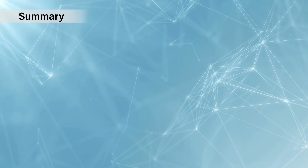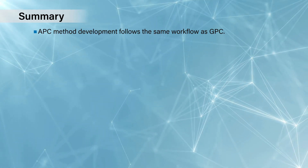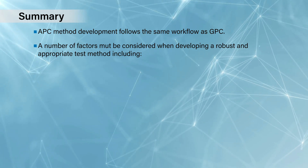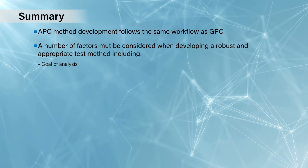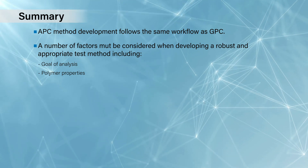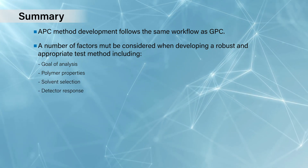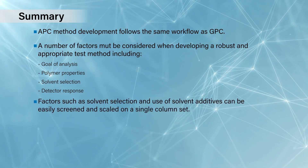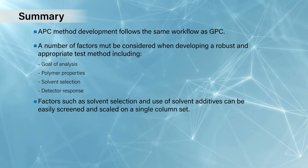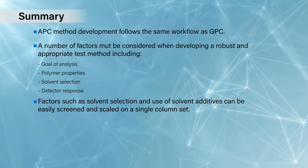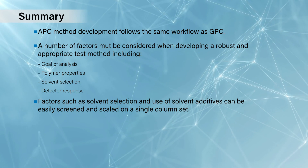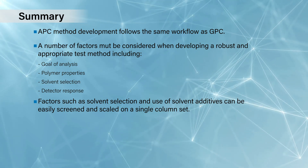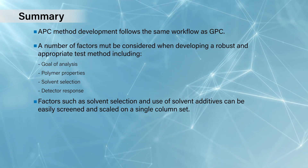To summarise the workflow of approaching method development with APC — it's the same as GPC. You have to consider a number of factors to ensure a robust and appropriate test: the goal of the analysis, the properties of your polymer such as chemistry and molecular weight, selecting the most suitable solvents and mobile phase, and which detectors you need. Where the APC takes it to the next level is the ability to screen multiple solvents to ensure the best separation and best mobile phase, and then within that solvent, how to optimise through the use of additives or modifiers. You can both screen and optimise on the APC very easily, which is difficult to do on traditional GPC due to time constraints and the polymeric columns themselves.